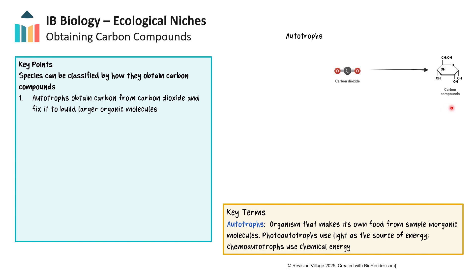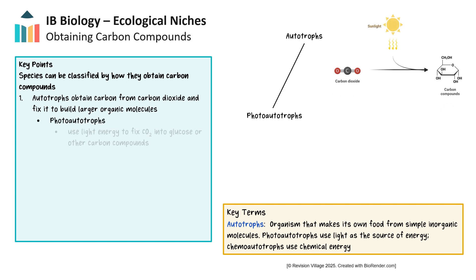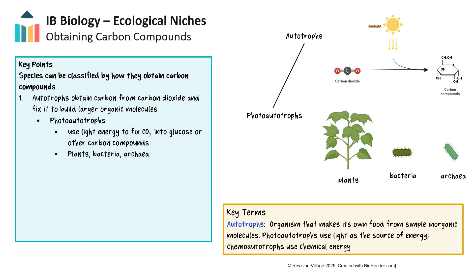Photoautotrophs use light energy to convert carbon dioxide into glucose or other carbon compounds. This includes plants, algae, and single-celled eukaryotic organisms like Chlorella, which perform photosynthesis in chloroplasts using the pigment chlorophyll. Cyanobacteria, which are bacterial prokaryotes with no chloroplasts, will use chlorophyll or other pigments for photosynthesis, giving them a bluish-green color.